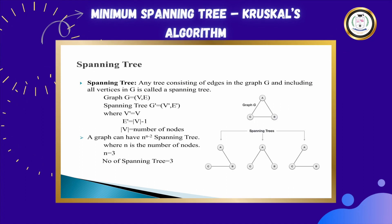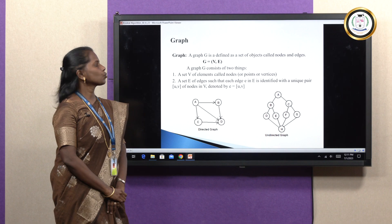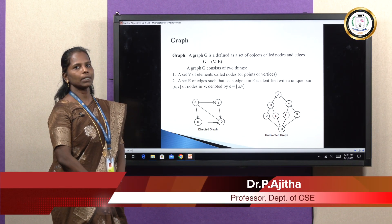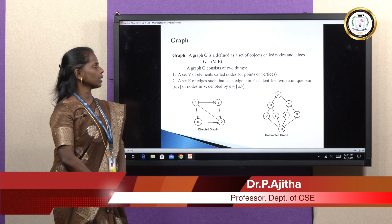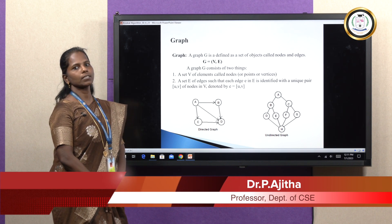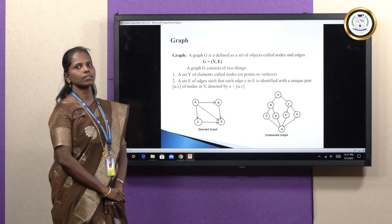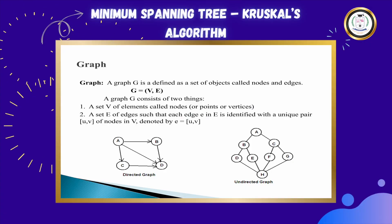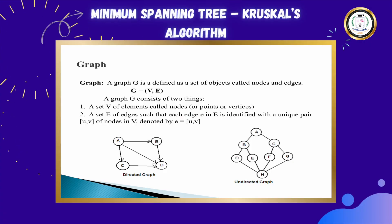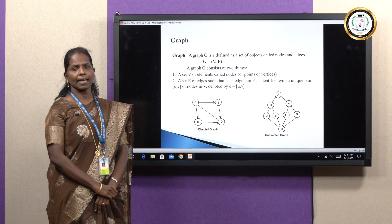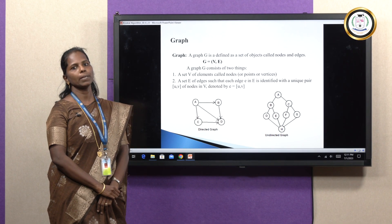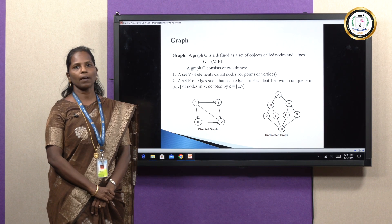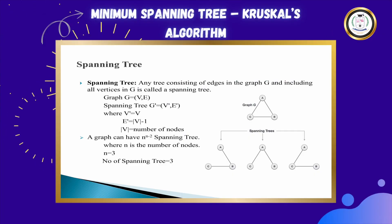A graph is a collection of nodes and edges. A graph can be represented as G = (V, E), where V represents the set of nodes and E represents the set of edges. Here I have shown two types of graph — one is directed, another one is undirected. In a directed graph, the edges will have arcs. In an undirected graph, the edges won't have any arc.